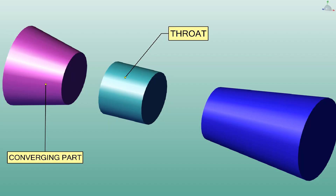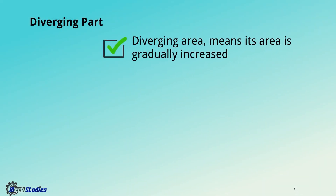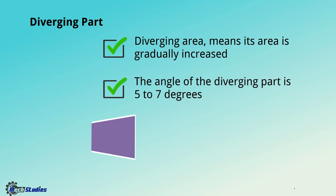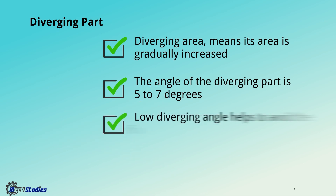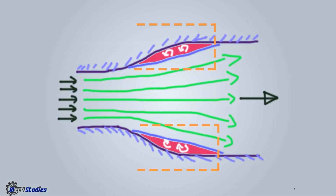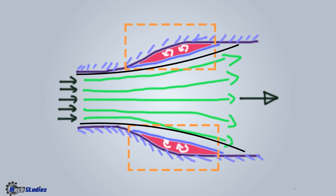Now we will talk about the basic characteristics of the diverging part. The area is gradually increasing. The angle of the diverging part is 5 to 7 degrees. A low diverging angle helps to avoid flow separations and eddy formations. Look at this diagram — this shows eddy formations or flow separations, and a low diverging angle helps to avoid these.